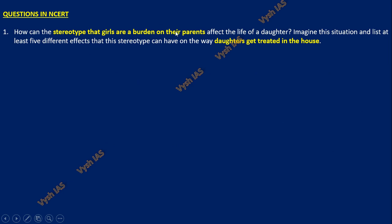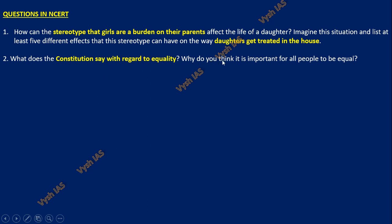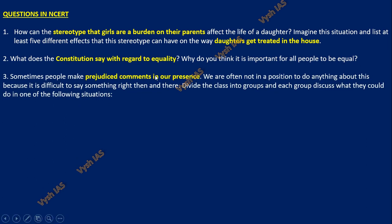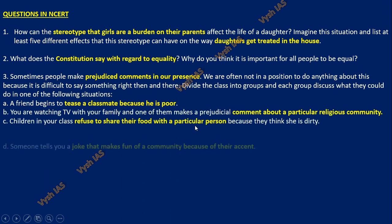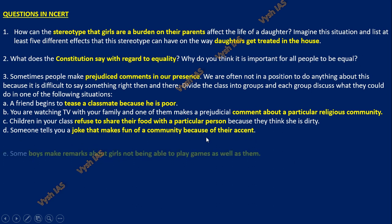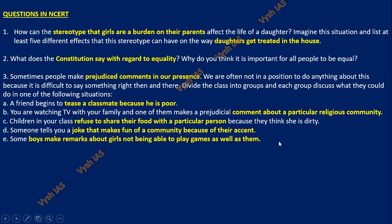One question: how can stereotypes — like that girls are a burden on their parents — lead to discrimination? The dowry system and how daughters are treated in their house or in-laws house — these are relevant for case studies, essays, or interviews. Then: what does the constitution say regarding equality? And: why do you think it is important for all people to be equal? These can be asked in interviews and are good for essay points. Examples of prejudice in our presence: teasing a classmate because he is poor, making a bad comment about a particular religious community, refusing to share food with a particular person, making jokes about a community because of their accent, boys making remarks about girls not being able to play games like cricket. These five points, even though they are NCERT questions, can be used as examples of prejudice, stereotyping, and discrimination in any mains question.